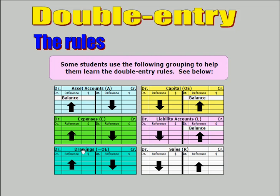Drawings. The double entry accounting rule says that to increase drawings, you use a debit entry.